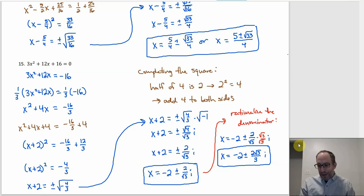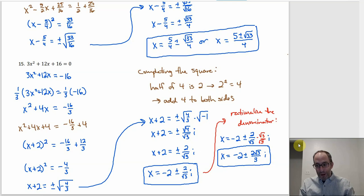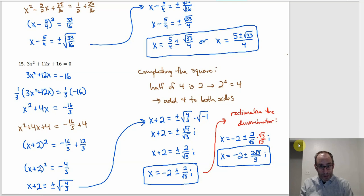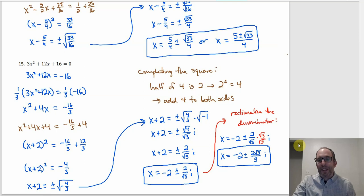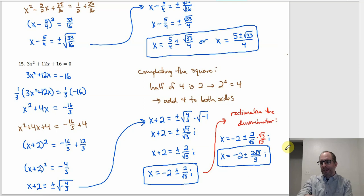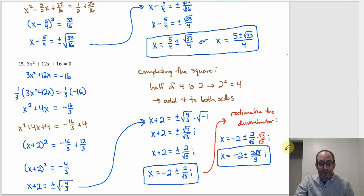That takes care of number 15, and that takes care of section 7.1. There's a lot in here — basically two big pieces: completing the square and the square root property. Solving a quadratic by completing the square combines those: complete the square first, then apply the square root property. Sometimes the answers look crazy if you end up taking the square root of non-perfect-squares, but that just comes with the territory, since most numbers aren't perfect squares.